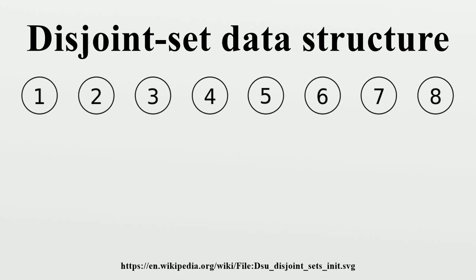In computer science, a disjoint set data structure, also called a union-find data structure or merge-find set, is a data structure that keeps track of a set of elements partitioned into a number of disjoint subsets.